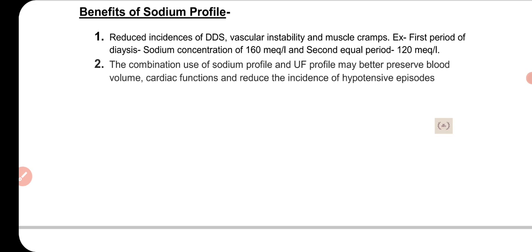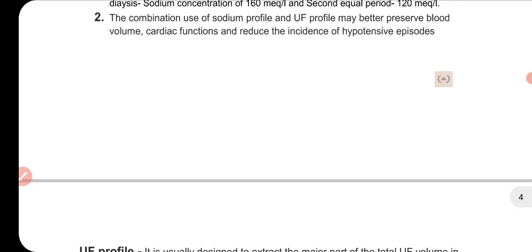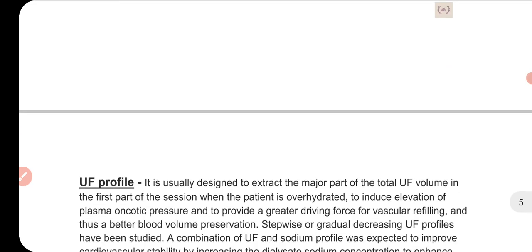Now the benefits of sodium profiling. Sodium profiling helps manage hypertension, dialysis disequilibrium syndrome, and muscle cramps. It reduces the incidence of dialysis disequilibrium syndrome and vascular instability. For example, in the first period of dialysis sodium concentration is 160 mEq/L and in the second period 120 mEq/L. With the decreasing profile, we can manage muscle cramps, vascular instability, hypotension, and dialysis disequilibrium syndrome. The combination of sodium profile and UF profile may better preserve blood volume, cardiac function, and reduce hypotensive episodes.